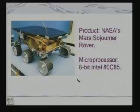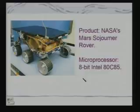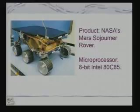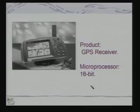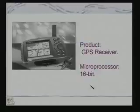This is NASA's Mars Rover, a mobile robot that uses an 8-bit Intel microprocessor — specifically 80C85, a variant of the 8085 microprocessor — and this robot moved on Mars. This is a GPS receiver, a global positioning system that enables any transport vehicle to determine its location. For automotive systems it provides an automated navigational tool, and these GPS receivers are becoming very commonplace.